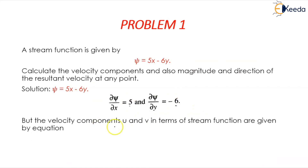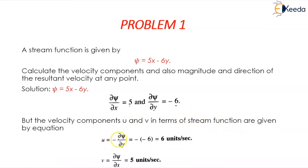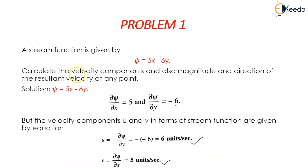The velocity components u and v in terms of stream functions are given by: u is equal to minus ∂ψ/∂y, which equals minus of minus 6, giving u equal to 6 units per second. And v is equal to ∂ψ/∂x, which equals 5 units per second. So now we have calculated the velocity components.